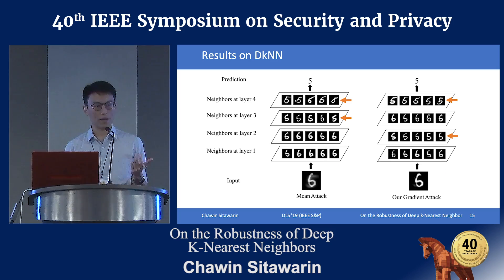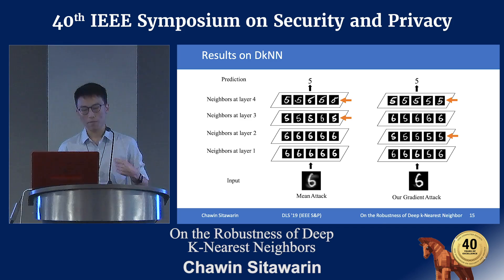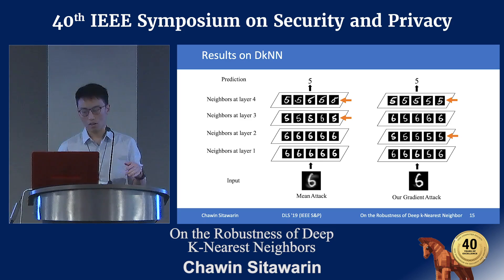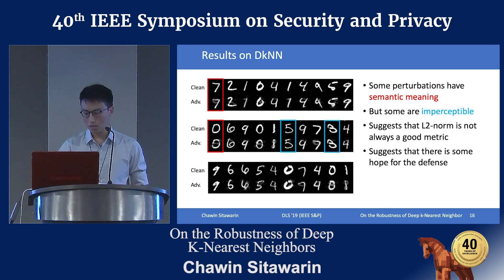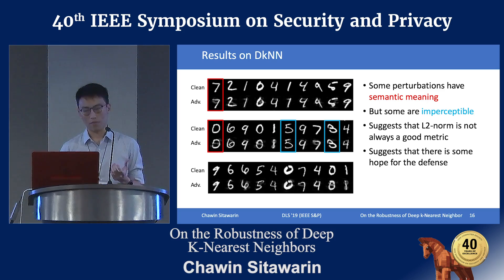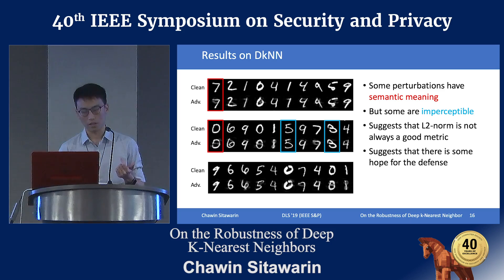We present the same diagrams as before but now give adversarial input instead. For the mean attacks, the neighbors in the third and fourth layers are now being changed to the wrong class. For our gradient attack, the second and fourth layers are being changed — this may have to do with the optimizer deciding that these two layers are easier to change the neighbors in. Here are some samples generated by our attacks. Some perturbations still have semantic meanings, as in those in the red boxes — like the seven and the zero. But now a lot of them are actually imperceptible, like those in the blue boxes. It is really difficult to see the perturbation in the fives and threes.